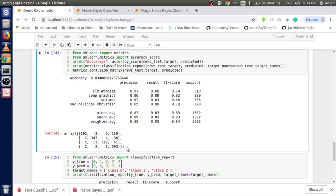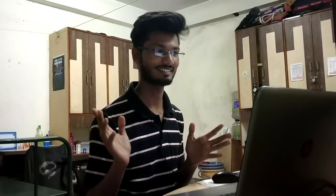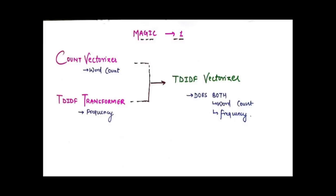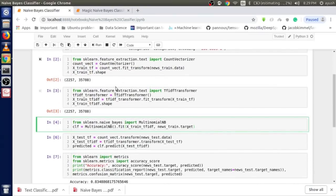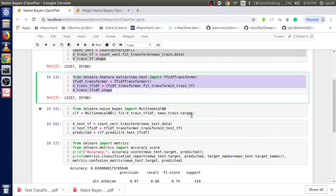Writing all that code is a lot. But now I have some magic to reduce the entire thing. Count Vectorizer does word counting; TF-IDF Transformer calculates frequencies. There's one more class — `TfidfVectorizer` — that can do both at the same time. So instead of writing both separately, I just write `TfidfVectorizer`. And instead of writing Multinomial NB separately, I can use a pipeline.